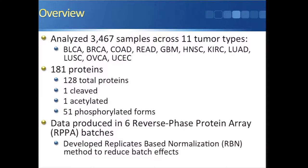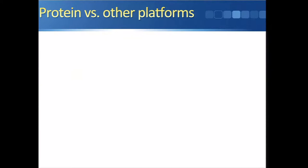The first step we did was develop an algorithm called Replicate Space Normalization to reduce batch effects between the six batches.